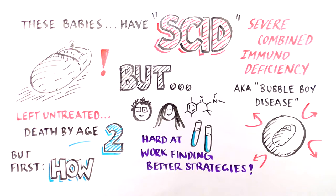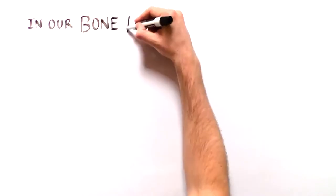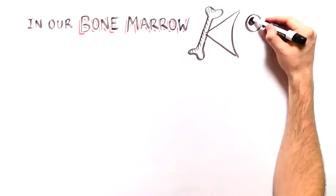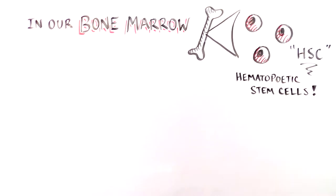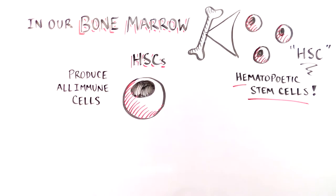Before we explain the therapies, let's discuss how the immune system develops. A special type of cell lives in our bone marrow called a hematopoietic stem cell, or HSC. These cells can produce all of the different types of immune cells.